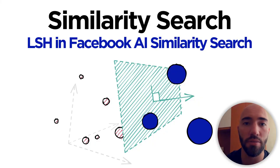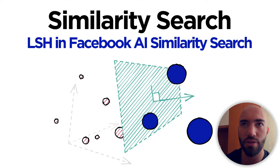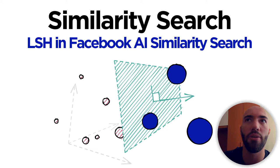Hi and welcome to the video. We're going to be covering how we can implement LSH in FAISS. We covered LSH and how it works using random projection in a previous video, which I'm going to release at the same time as this video — I'll link to that in the description if you want to understand how LSH works. But in this video we're just going to cover how we implement it in FAISS.